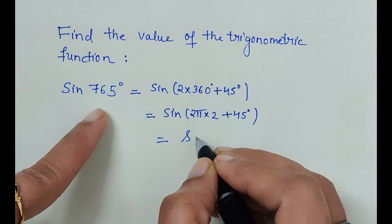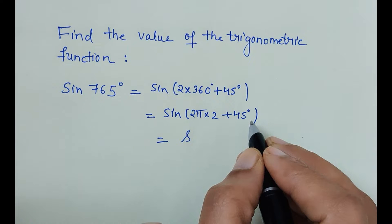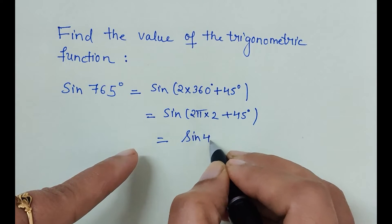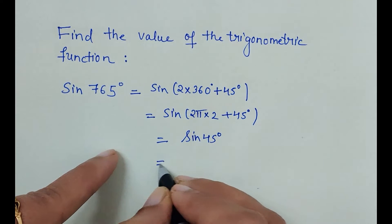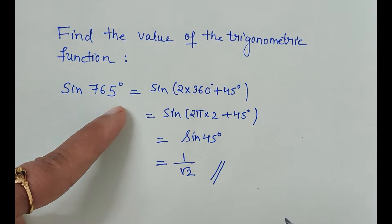This is nothing but sine 360 plus theta, which means sine will be positive only. So sine 45 degrees, and sine 45 we all know is 1 upon root 2. This is how we solve sine 765 degrees.